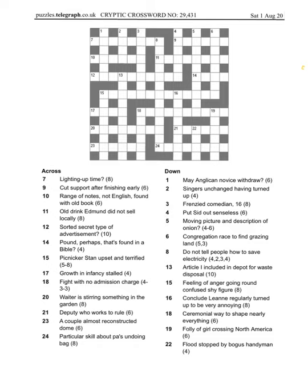Hi, this is the walkthrough for the Telegraph Prize cryptic crossword number 29,431 on Saturday the 1st of August. We'll start with seven across, lighting up time. Well this isn't putting the road lights on, it's when the light goes up in the sky. It's gonna be daybreak.